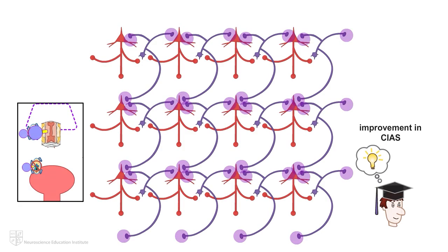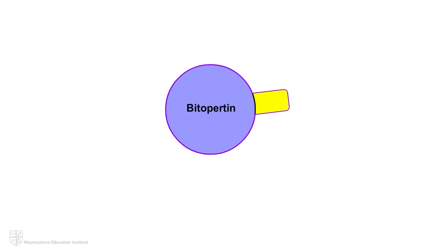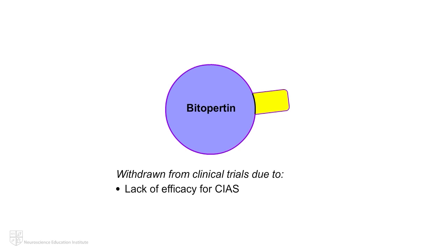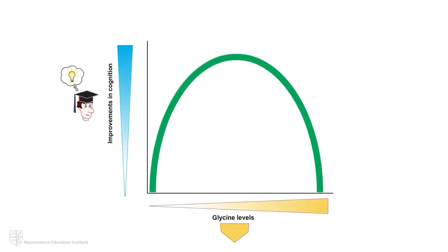One high-affinity, non-competitive GlyT1 inhibitor studied in clinical trials is bitapertin. Although early trials were promising, ultimately bitapertin was withdrawn from further clinical trials due to lack of efficacy for CIAS as well as troubling adverse events. However, much was learned from the studies of bitapertin and allowed for a greater understanding and fine-tuning of novel GlyT1 inhibitors.